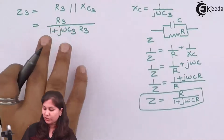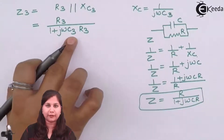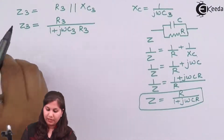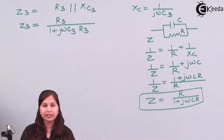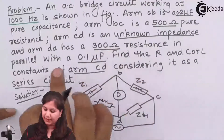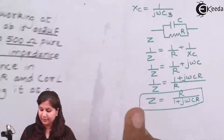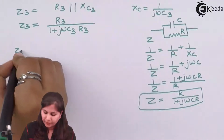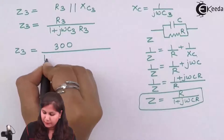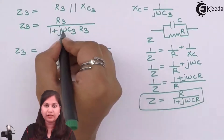We have obtained the impedance Z3. Now putting in the values: R3 is 300 ohms and C3 is 0.1 microfarad. So Z3 = 300 / (1 + jω × C3 × R3).